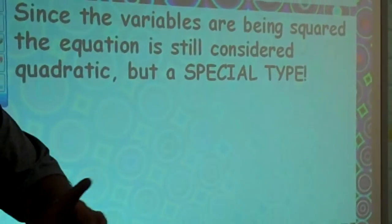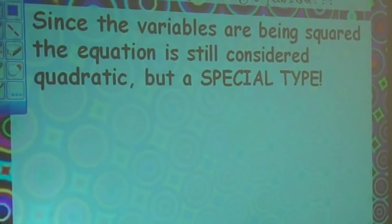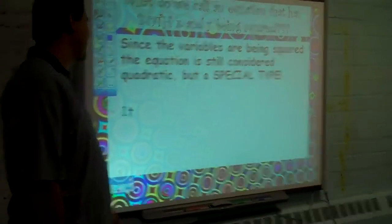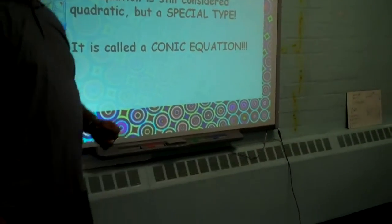But a special type of quadratic. Wait, wait, wait. Special type of quadratic is? Give us a hint. Conic. Conic. Conic equation. Conic equation.